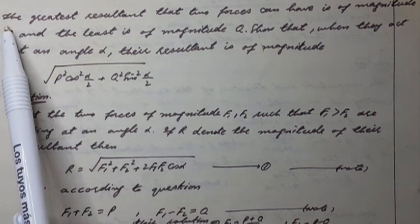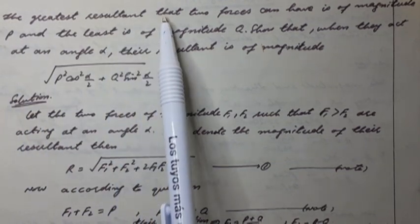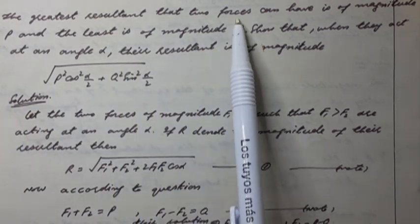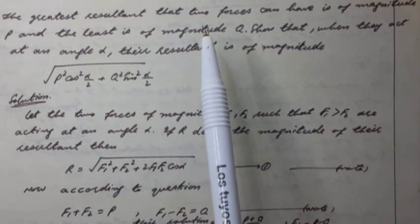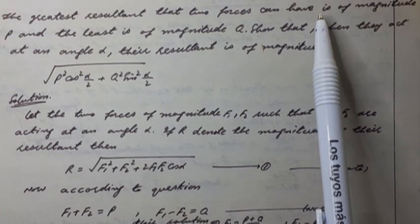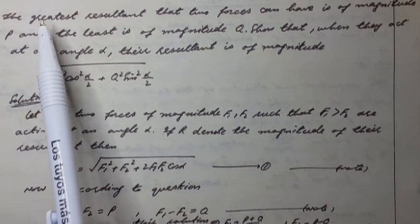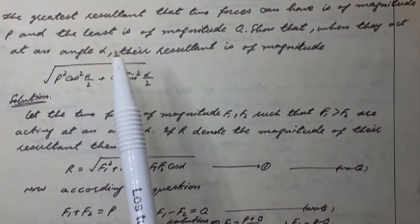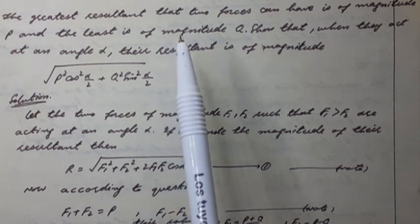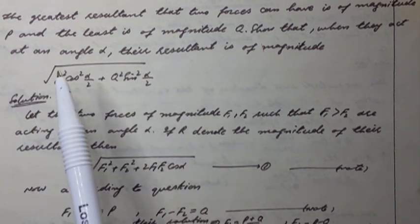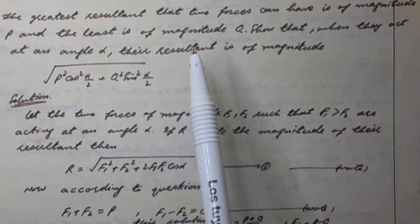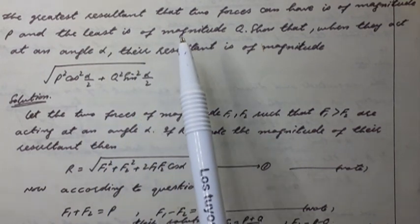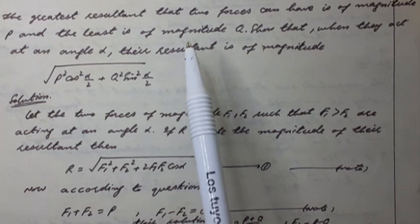Here, the greatest resultant that two forces, we suppose two forces f1 and f2, f1 greater than f2, can have is of magnitude p. Greatest resultant mean f1 plus f2 equal to p. And the least is of magnitude q. Least mean f1 minus f2 equal to q.